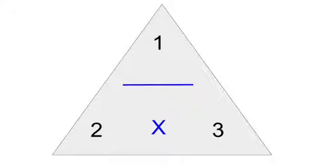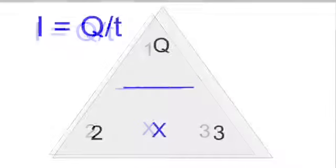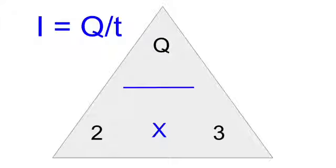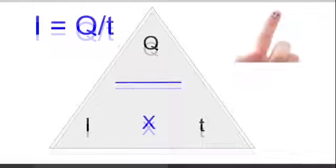There are three spaces in a triangle. With our equation, current is charge divided by time. There's only one place the Q can fit for our charge and it's in space one. Now it doesn't matter which way round you put your I and your T, but our rearranging can now be done.